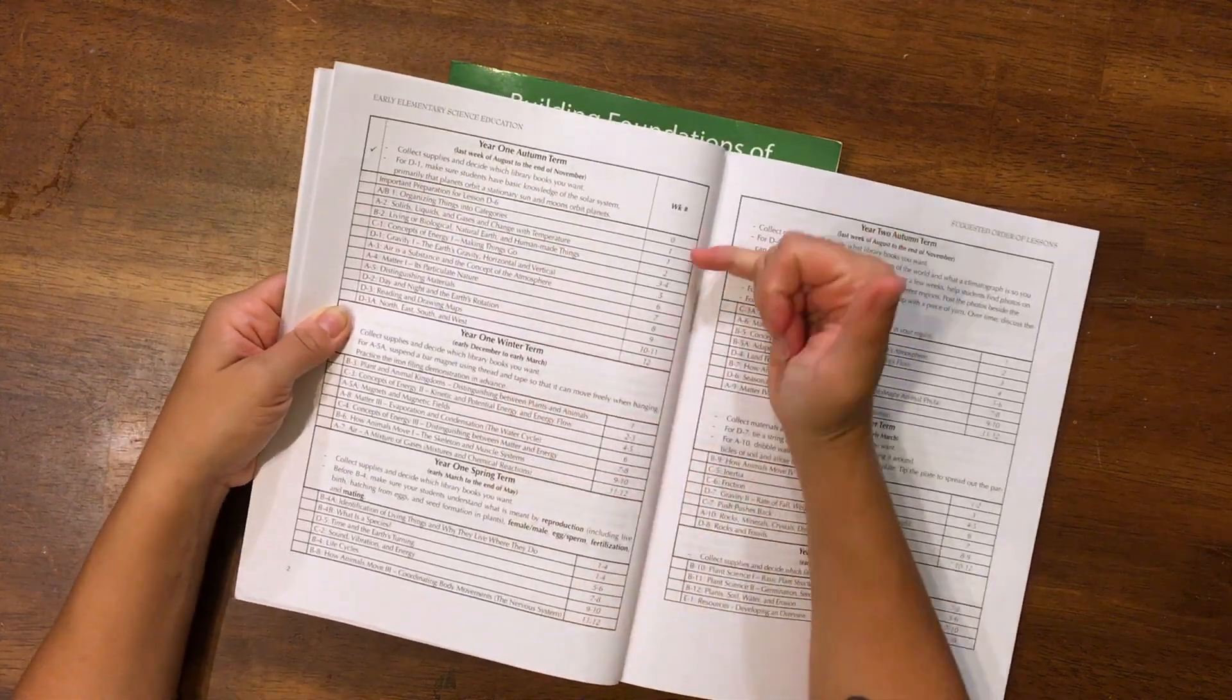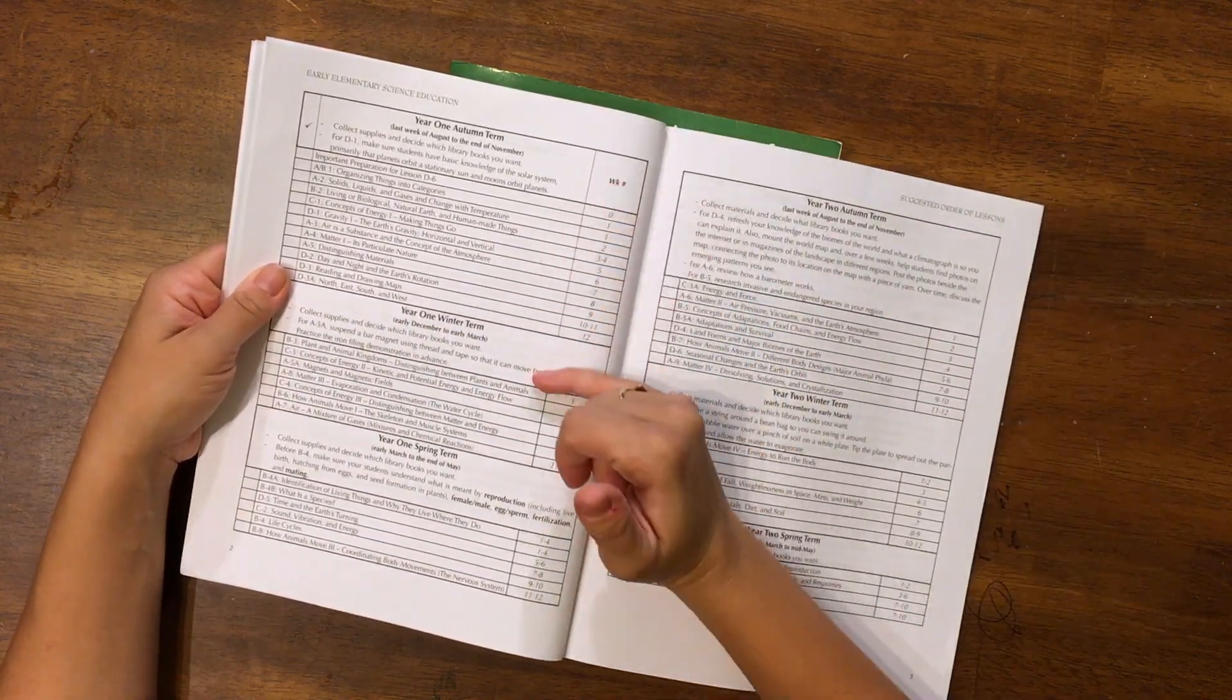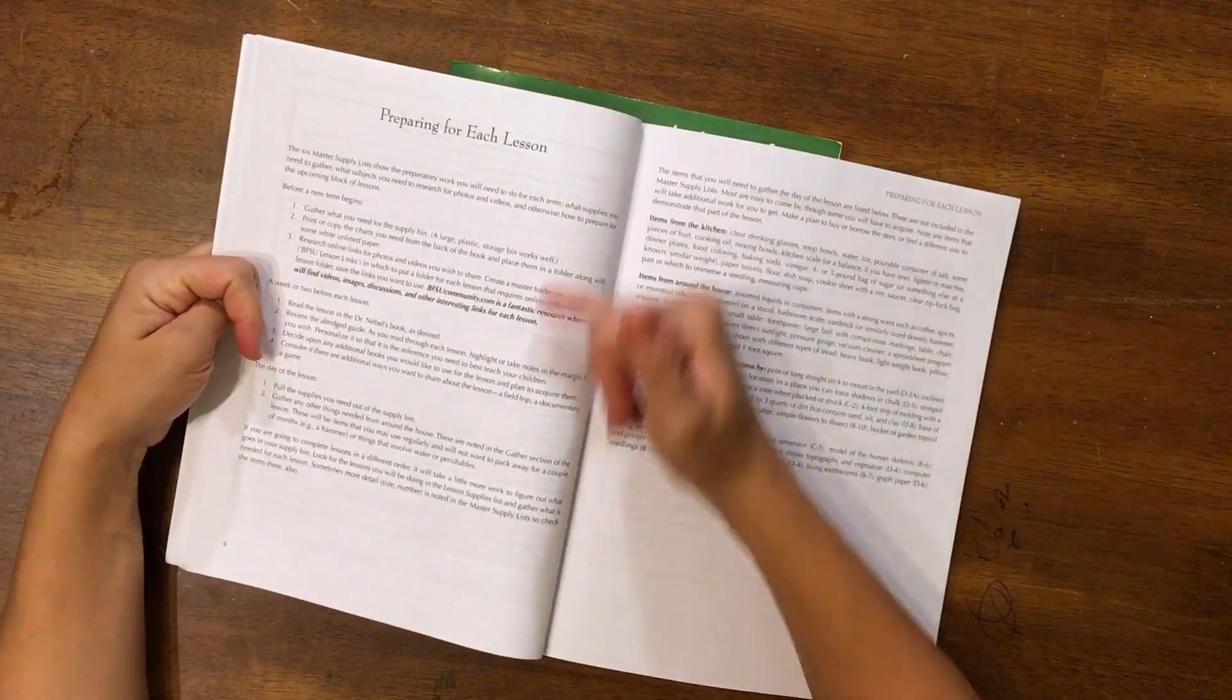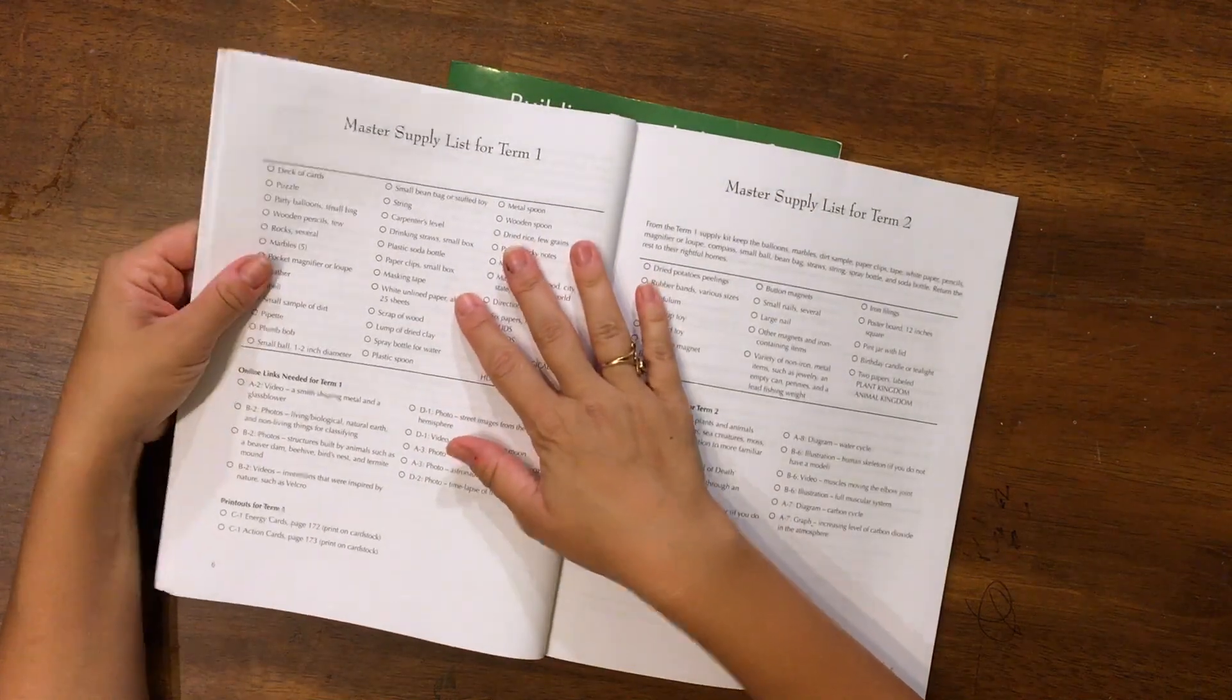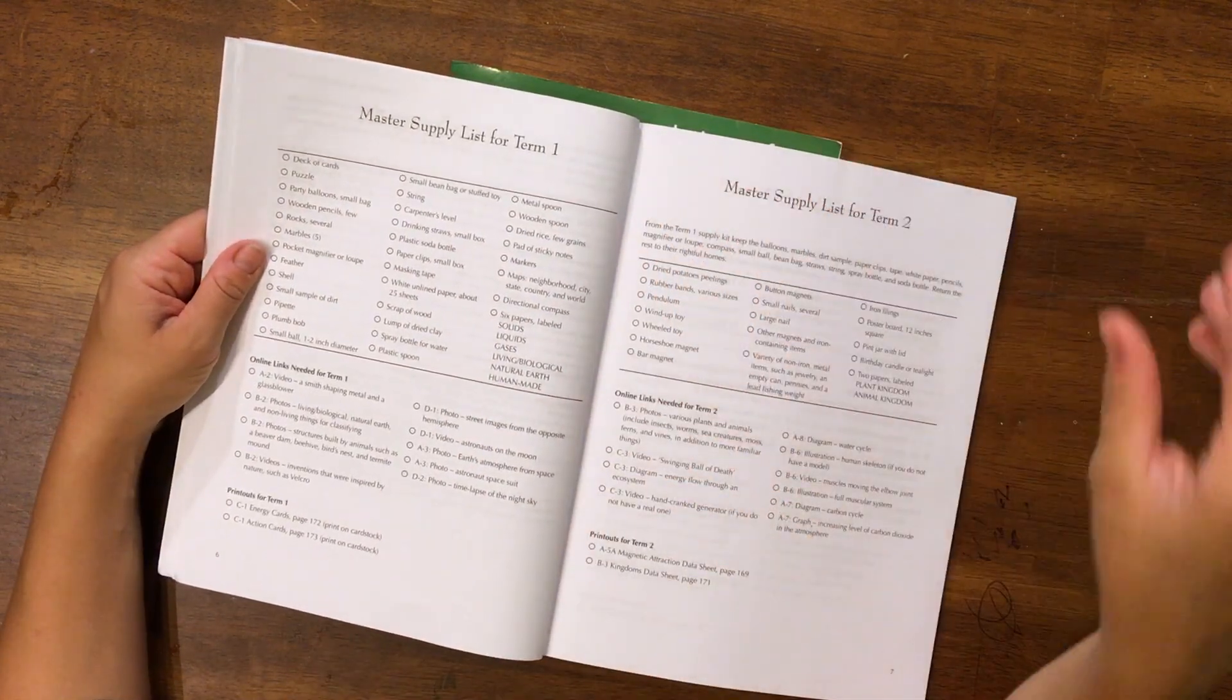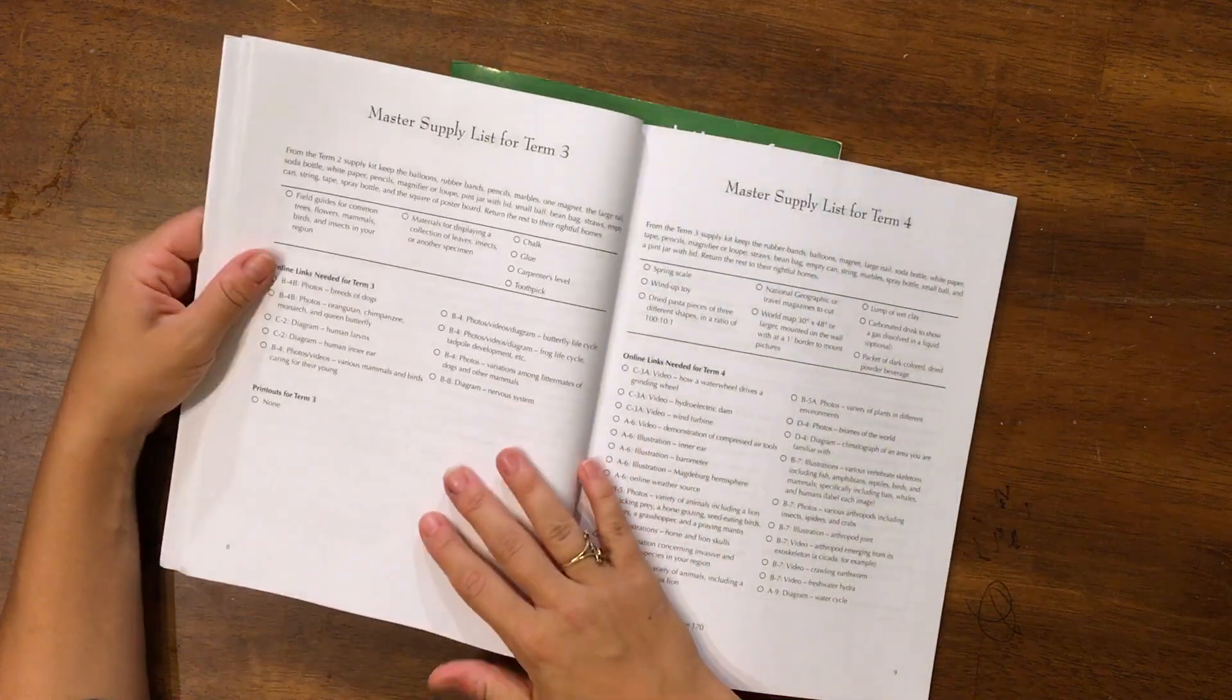What it is, is it has an order of lessons built in, so year one, autumn term, and it has your weeks laid out and your lessons laid out. It goes by term, so autumn, winter, spring, year two, autumn, winter, spring, etc. It has information on how to prepare each lesson. It has your master supply list for each term, so you just put together a bin of all of these items, and then all of the experiments and observational projects that you do, everything is just in your bin, which I think is absolutely genius.